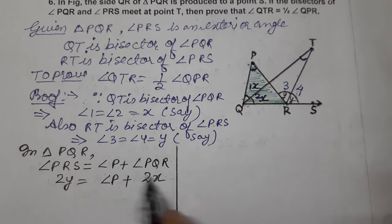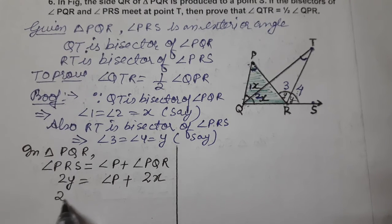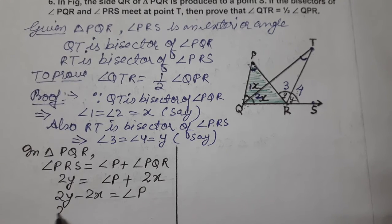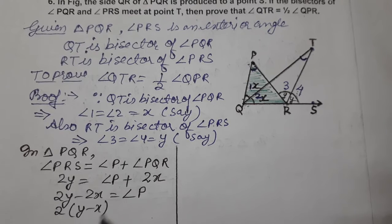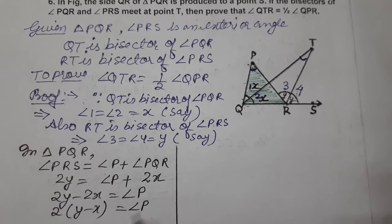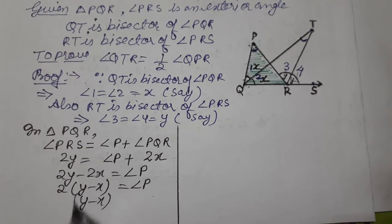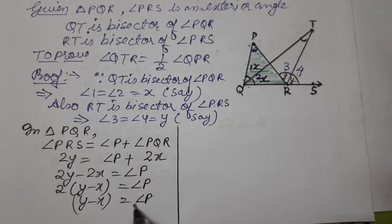Now 2y minus 2x equals angle P. Taking 2 common, this is y minus x equals angle P by 2. This is equation 1.